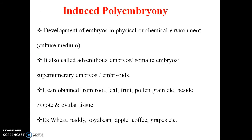Induced polyembryony means we are using physical or chemical environments or cultural media to develop multiple embryos — that is called induced polyembryony. It can be obtained from roots, leaves, pollen, besides zygotes and vascular tissue. Examples of crops include wheat, radish, apple, coffee, and grapes.